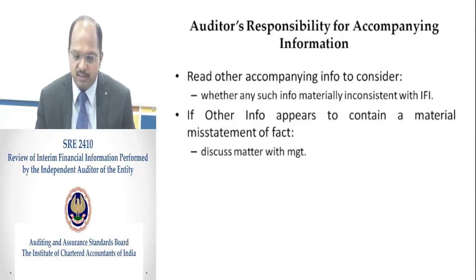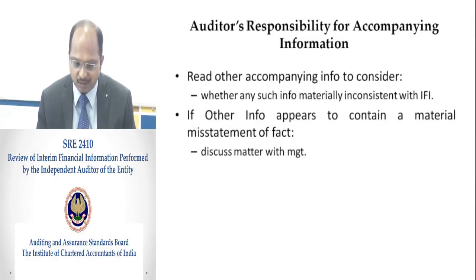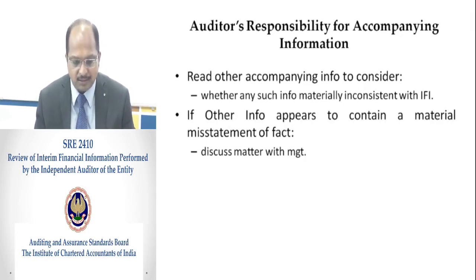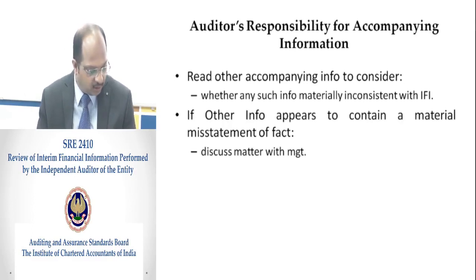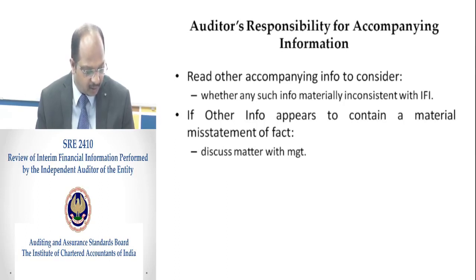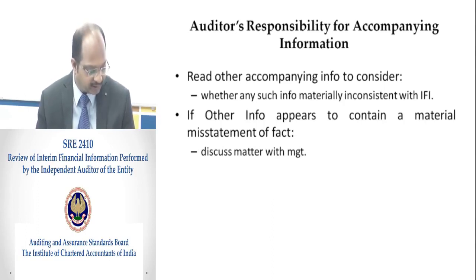The auditor must read other accompanying information to consider whether any such information is materially inconsistent with the interim financial information. If the auditor considers that other information contains a material misstatement of fact, the auditor must discuss the matter with management. If an amendment is necessary to correct a material misstatement and management refuses to make the amendment, the auditor must consider further action, such as notifying those charged with governance and obtaining legal advice.